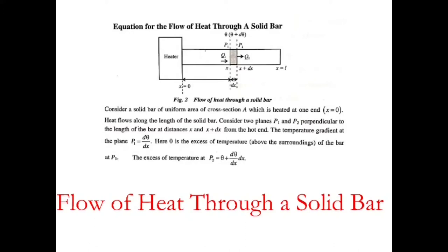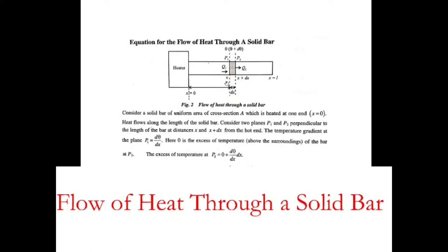Now consider two planes P1 and P2 at distances x and x plus dx from the hot end. Now look at the diagram. The solid bar is heated at the left end, which I am considering as x equals 0, and the right end as x equals L. That means the solid bar has a length L. Plane P1 is perpendicular to the bar at distance x from the left end, and plane P2 is parallel to P1 at distance x plus dx from the left end. The temperature at P1 is theta, and at P2 it is theta plus d theta by dx into dx, where dx is the distance between P1 and P2.